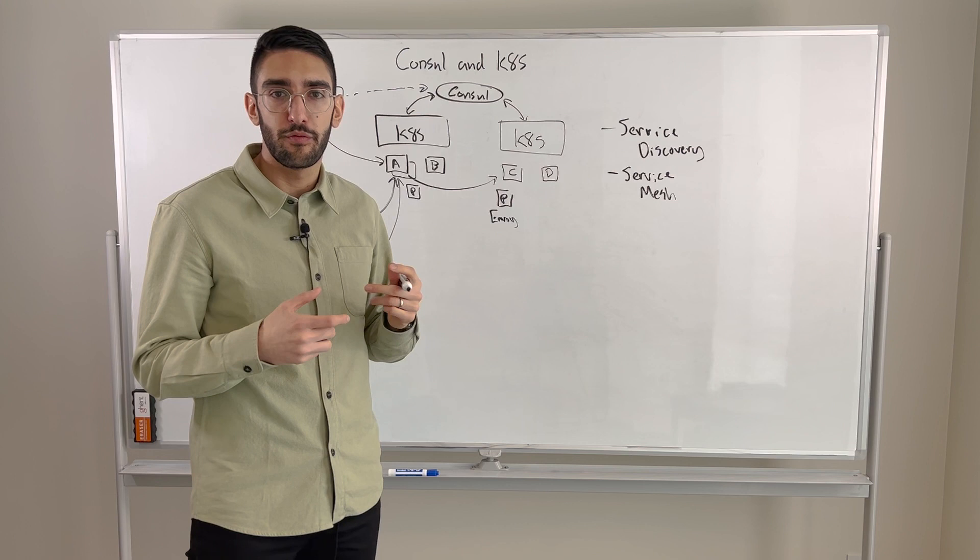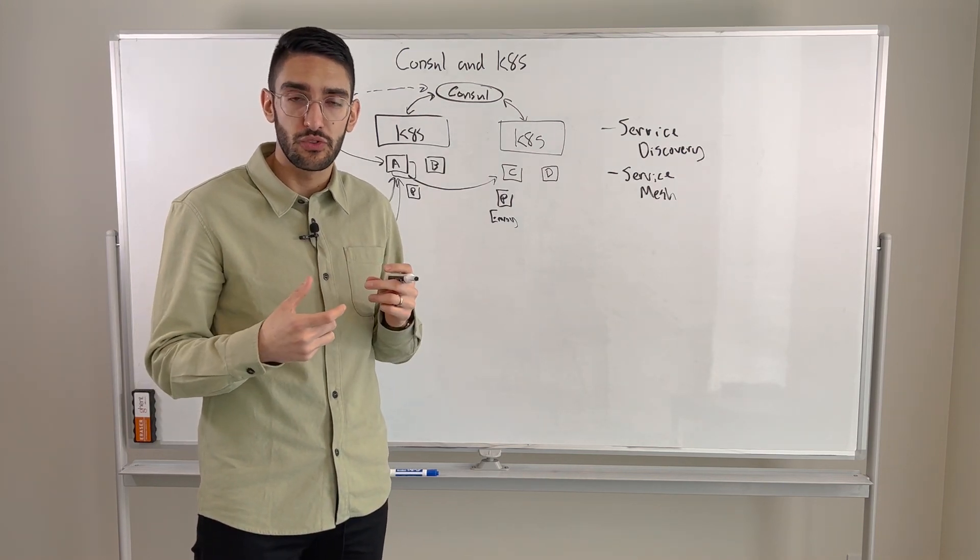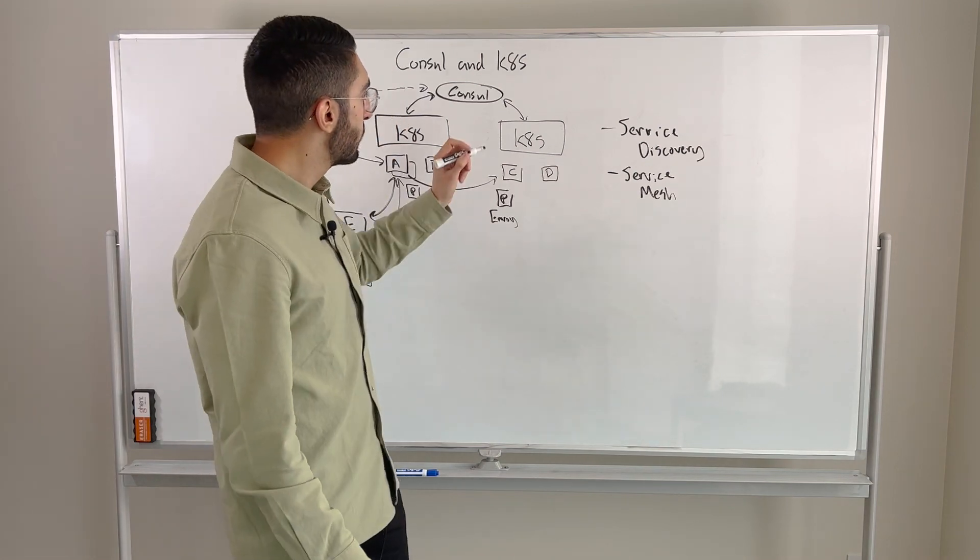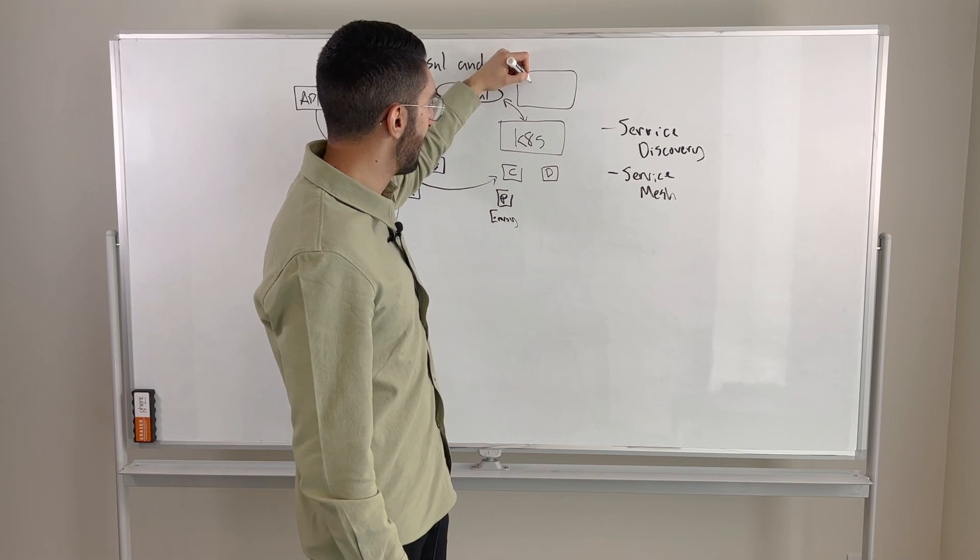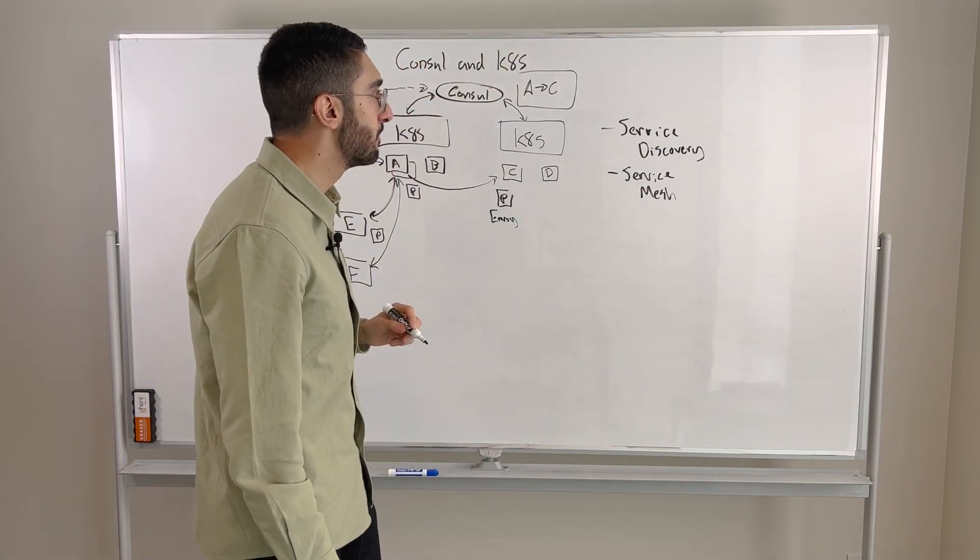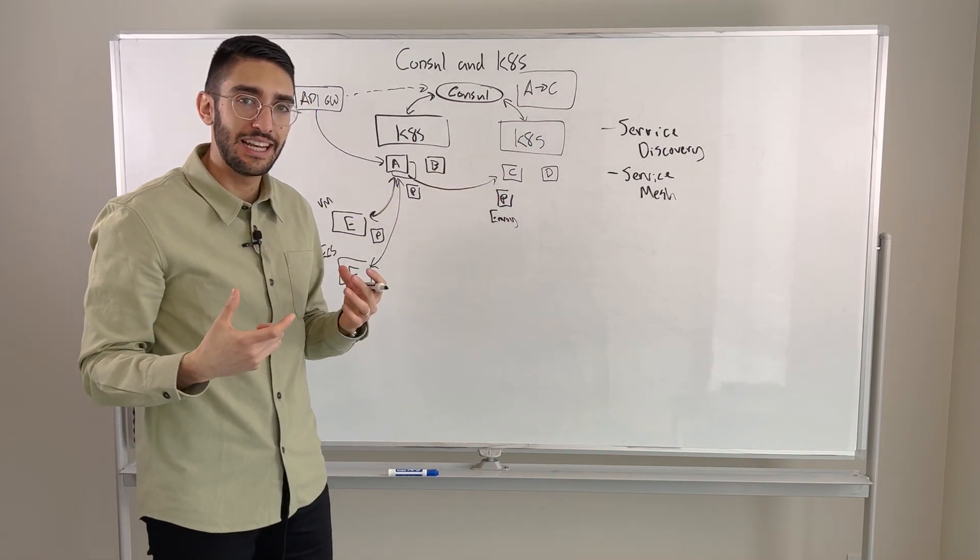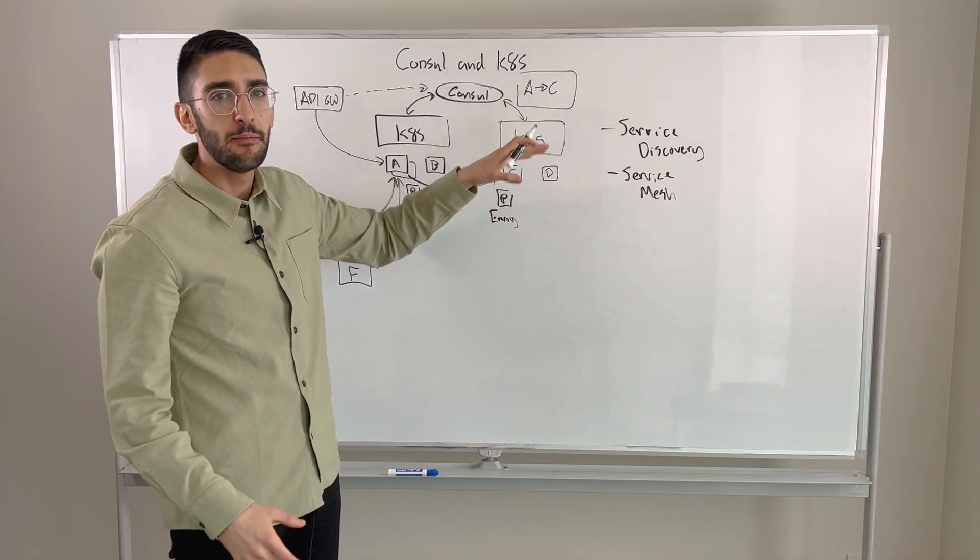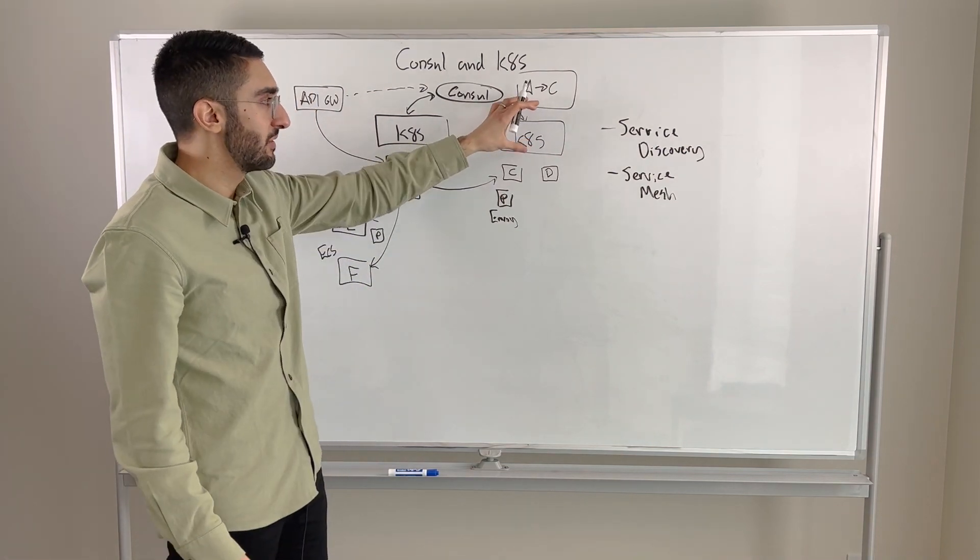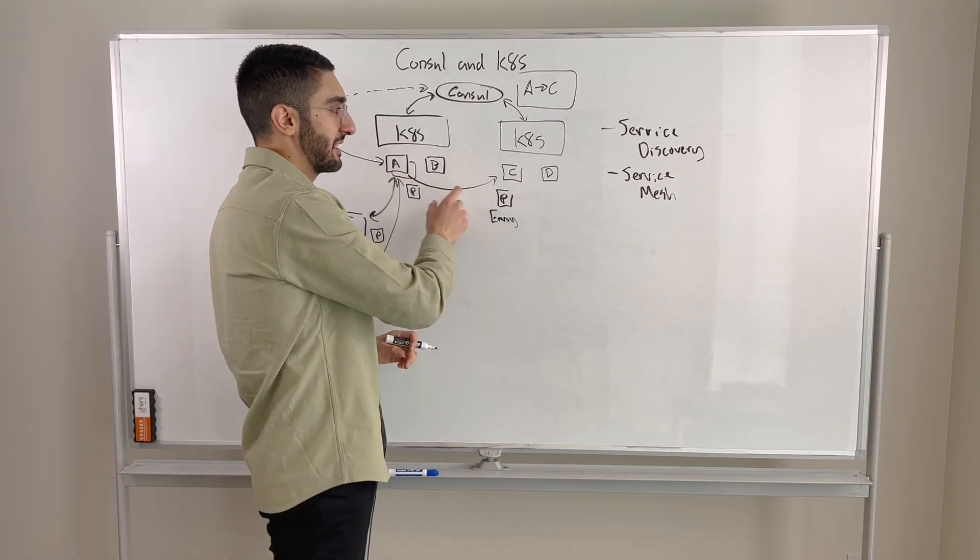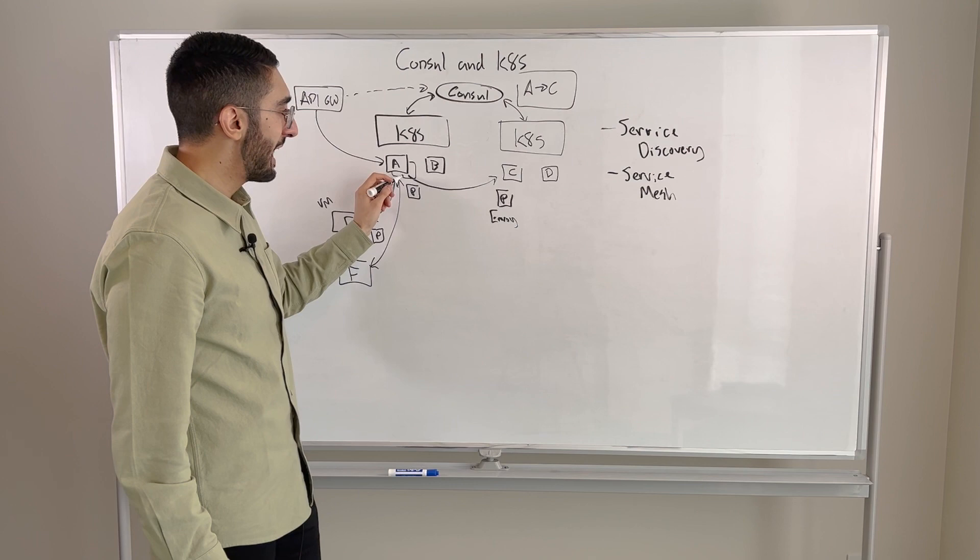One very key one becomes how do we sort of micro-segment our network? Or how do we have explicit security controls around who's allowed to talk to who? So we might want to define, for example, a central rule that says, yeah, service A is allowed to talk to service C. So we're going to define that rule using the logical identity of the application, in this case, service A and service C. I don't actually care what their IP address is. But now what we've done is we've segmented the network. We're saying, great, A can't talk to anything it wants, but it can talk to C.